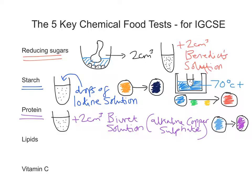Now let's look at the lipid test. In a previous video I mentioned you can rub a sample of food on translucent paper and it will go translucent — but that's a very basic test. The one we're going to look at is something known as the emulsion test for lipids. When I say lipids, I essentially mean fats and oils, so I'm referring to fats and oils in this test.